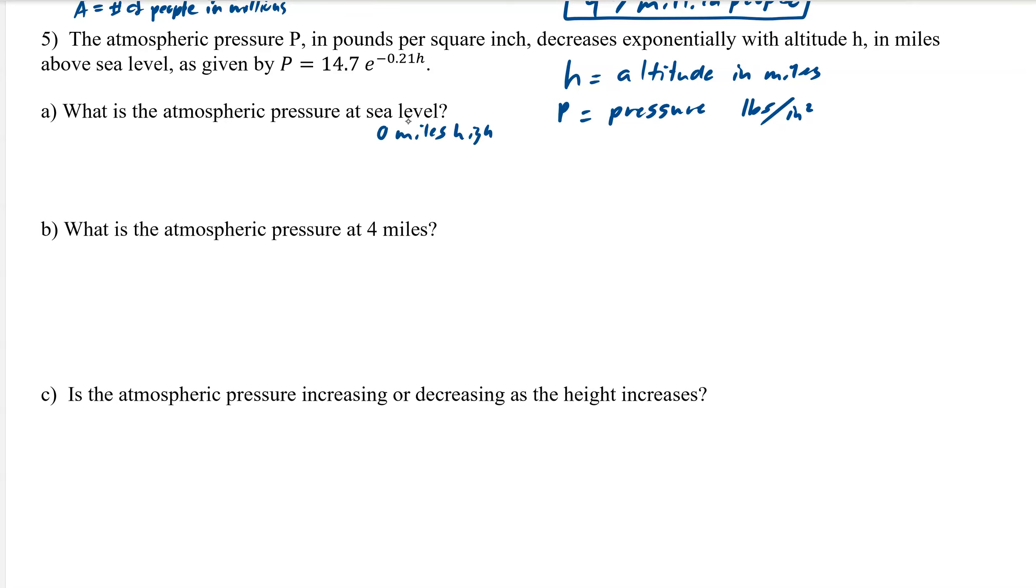So that means we have the initial value, and so we don't have to plug anything in. If you want to, you can, but we already know it's 14.7 pounds per square inch, because all we have to do is pick the initial value, and our initial value is always sitting in front.